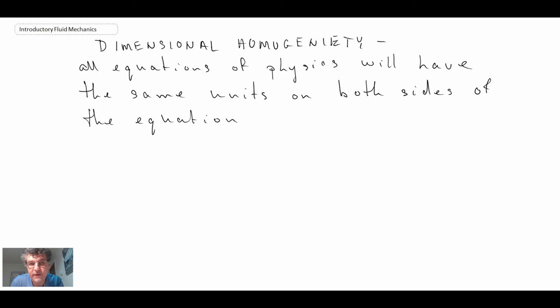So what dimensional homogeneity says is that all equations in physics will have the same units on both sides. And this is a common technique for any engineering student whenever you're solving a problem. If you want to check your answer, you check the units to ensure that it is consistent on the left and right. It doesn't guarantee that you've done it right, but it means you're moving in the right direction.